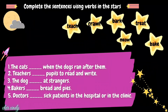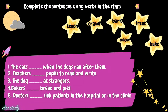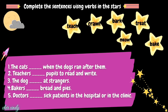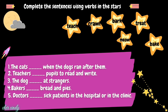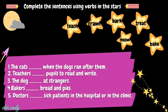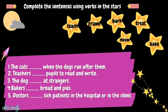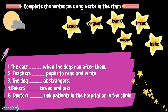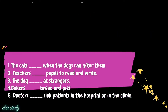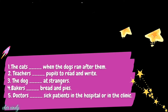Complete the sentences using verbs in the stars. Number 1: The cats blank when the dogs ran after them. Number 2: Teachers blank pupils to read and write. Number 3: The dog blank at strangers. Number 4: Bakers blank bread and pies. And number 5: Doctors blank sick patients in the hospital or in the clinic.